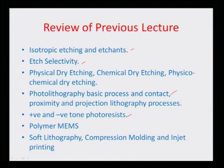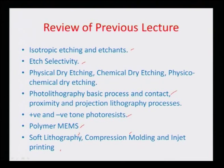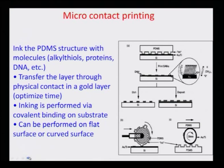We discussed positive and negative tone photoresist and how they cross-bond or debond to create features and structures on the surface. We also described polymer MEMS and talked about systems like soft lithography, compression molding, inkjet printing, and so on. We had just started with replication and molding process, which is the mother process for all soft lithography techniques. We will now start with some other soft lithography techniques from that same replication and molding technique.